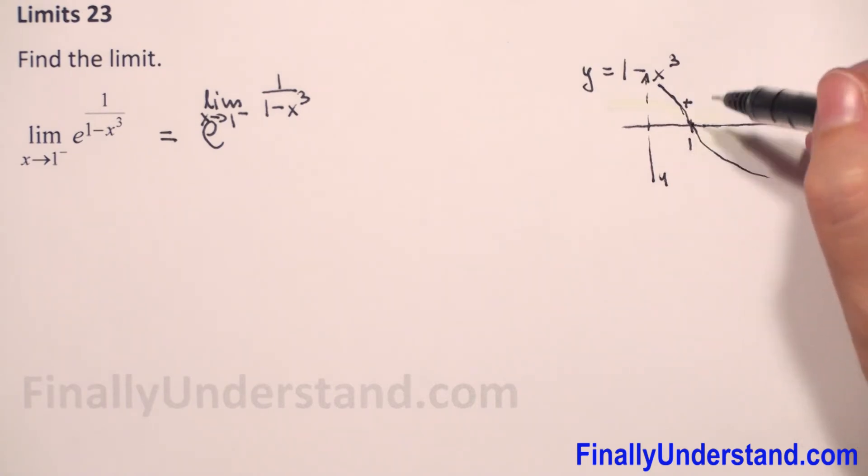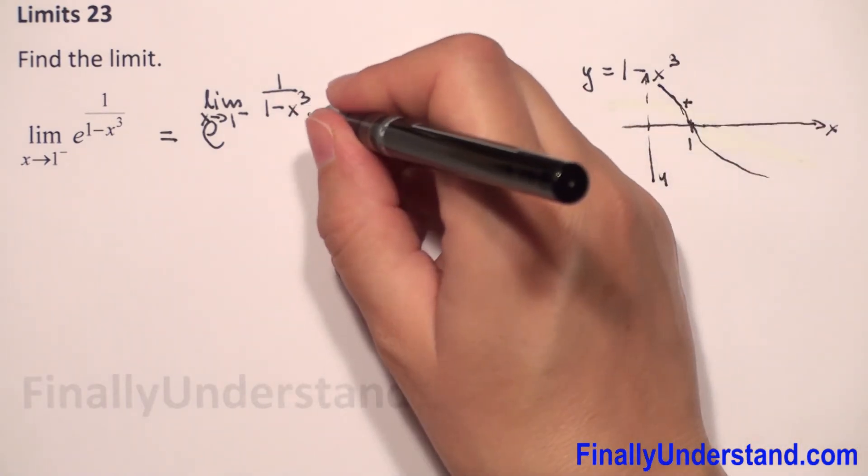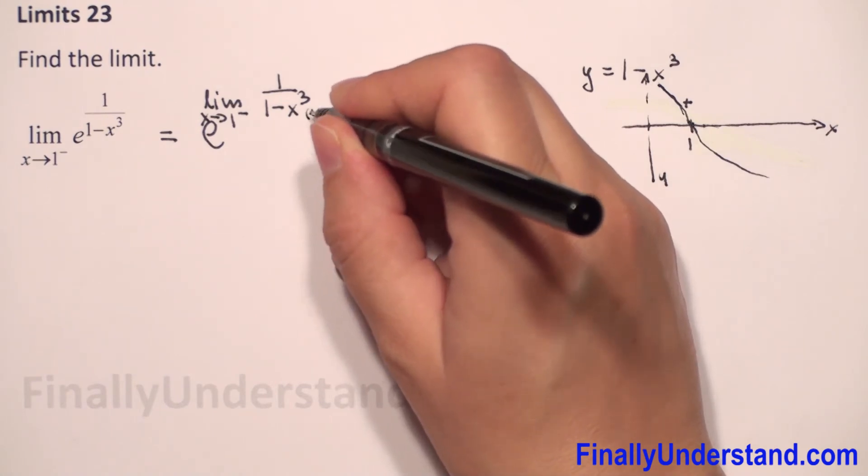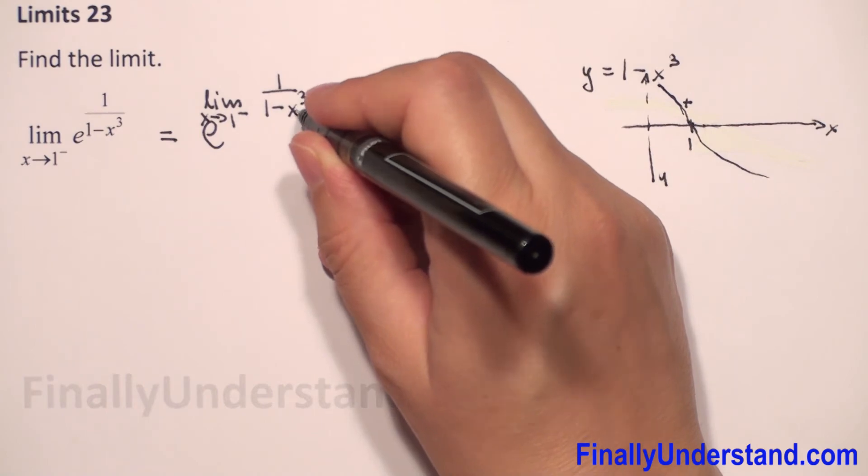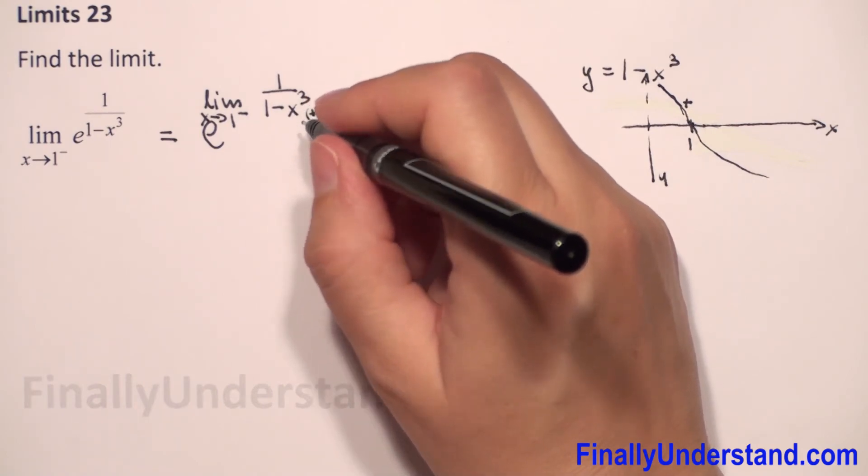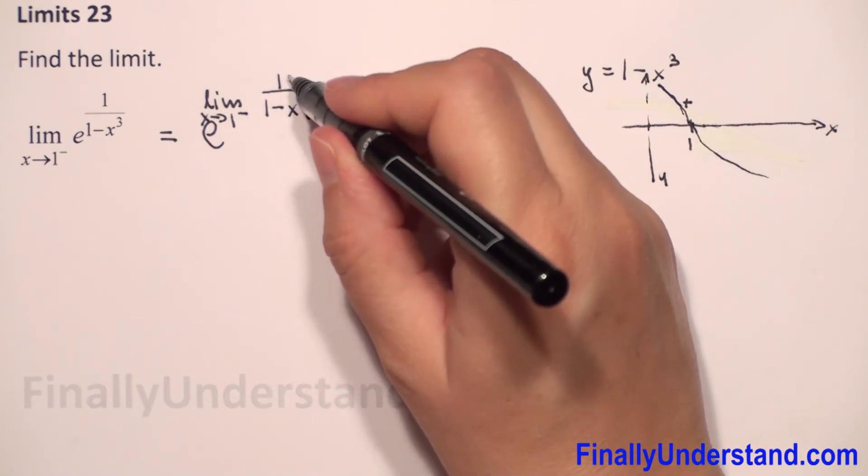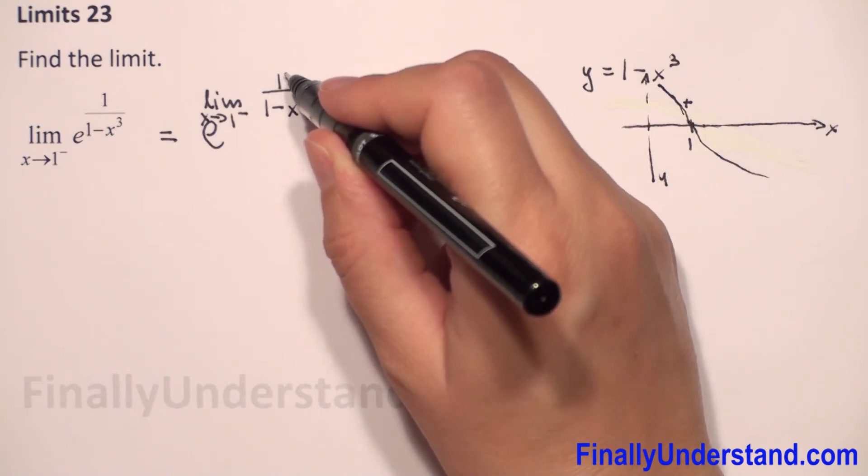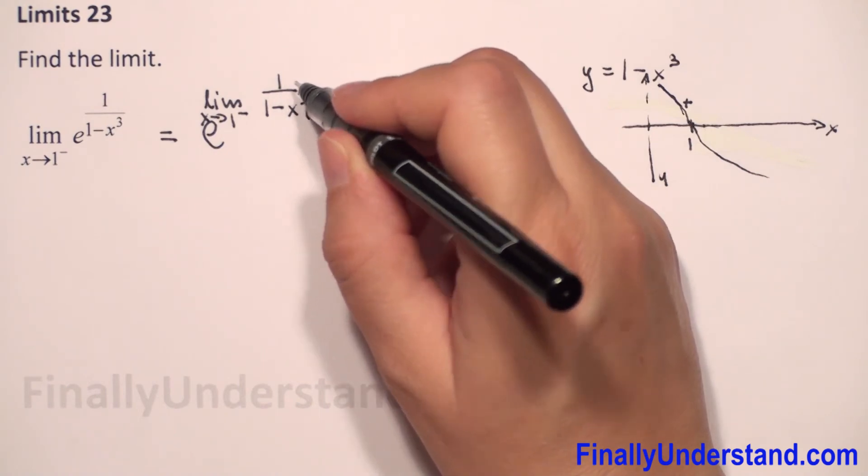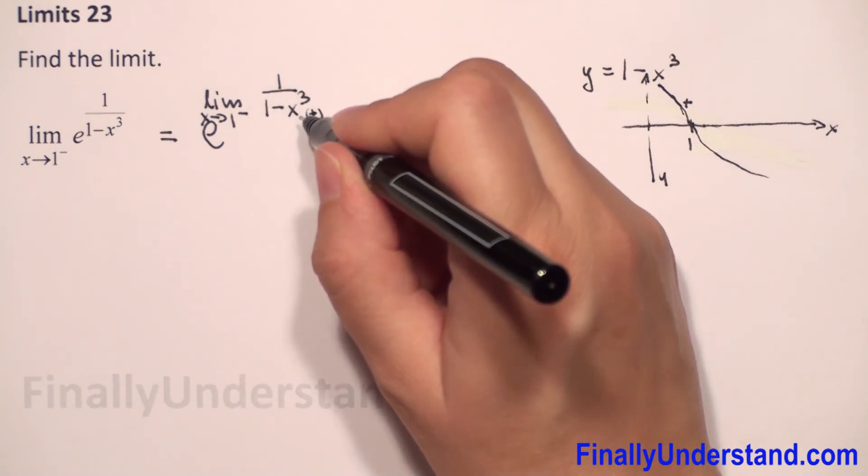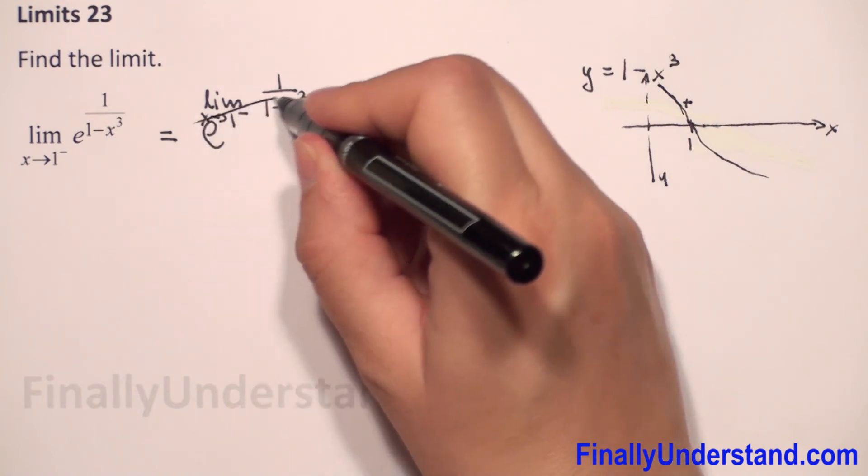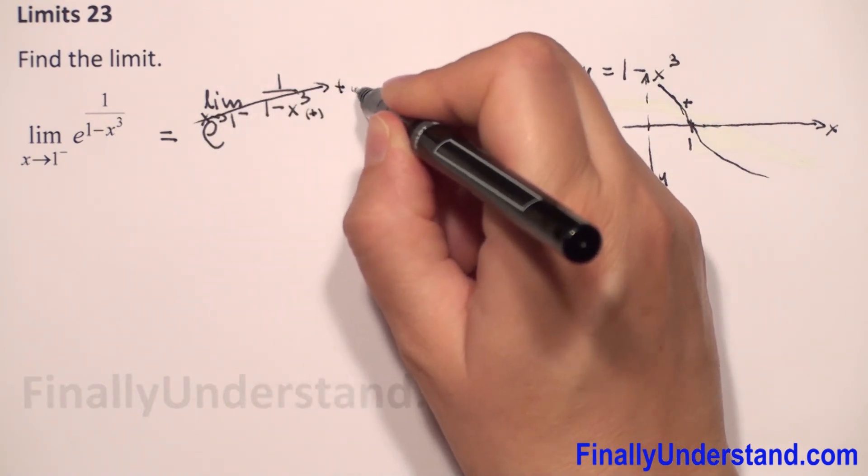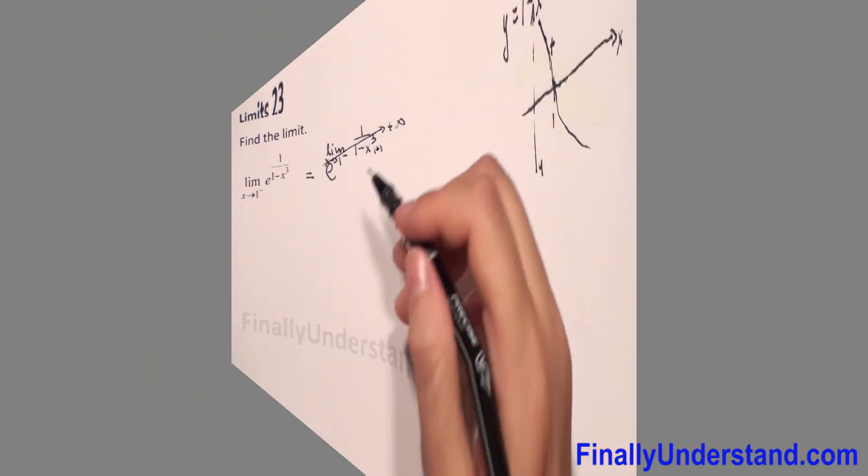So we have a positive number in the numerator but very, very small. The numerator is a constant positive number one, divided by a very, very small positive number gives us positive infinity. This is going to positive infinity.